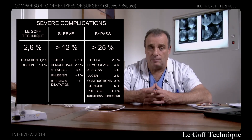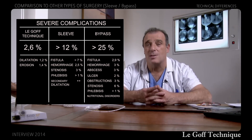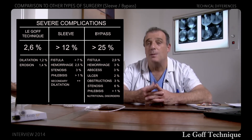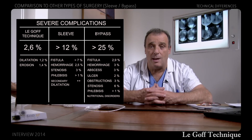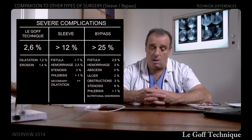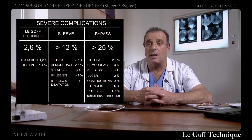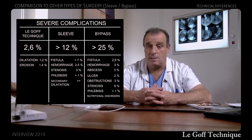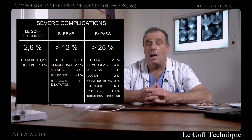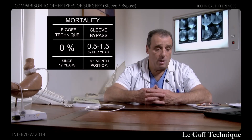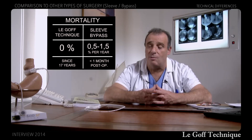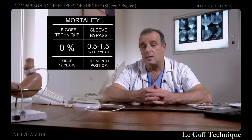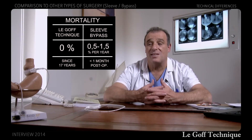These numbers compare favorably to the complications of sleeve and bypass, including fistulas. The rate of fistulas in sleeve is around 3.5%, with high risks, and also in bypass, with dramatic consequences in both cases, which can lead to operative mortality and death. In the Le Goff technique, I have a 0% operative mortality over 17 years. The operative mortality in sleeve or bypass varies but is between 0.5% and 1.5%.